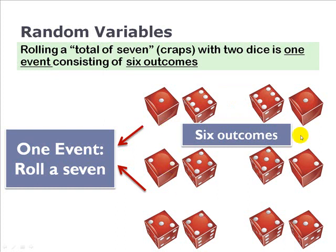There are six outcomes. Probabilistically, I may only be interested in the seven, which is the one event. But see how regardless of how I get to the seven, there's only the one event of rolling a seven that I care about. So in this case, rolling a seven is one event and we can get there with six different outcomes.